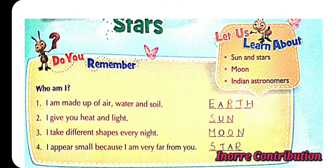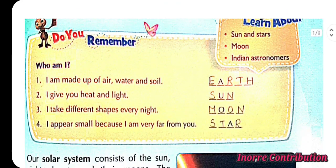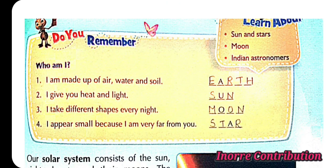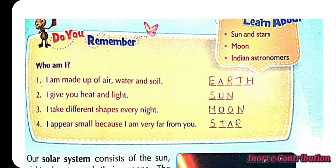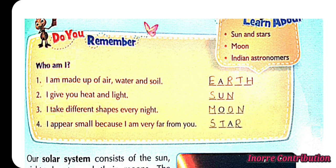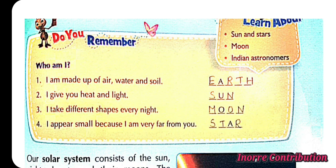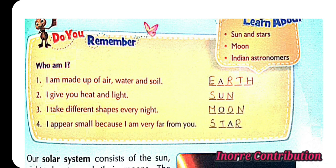Who am I? 1. I am made up of air, water and soil. Earth. 2. I give you heat and light. Sun. 3. I take different shapes every night. Moon. 4. I appear small because I am very far from you. Star.